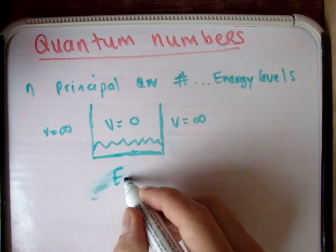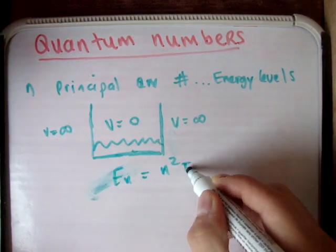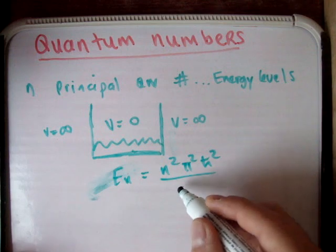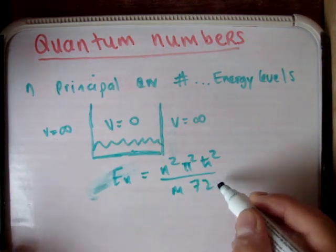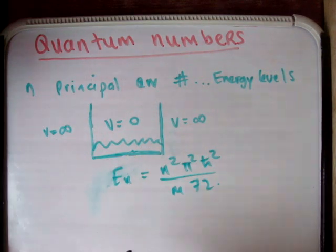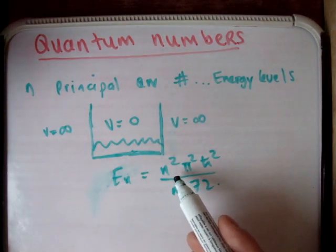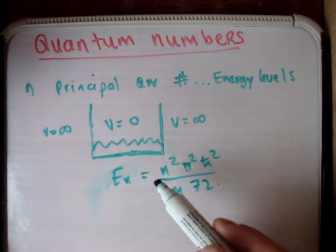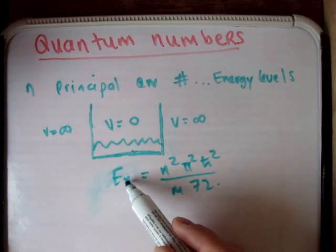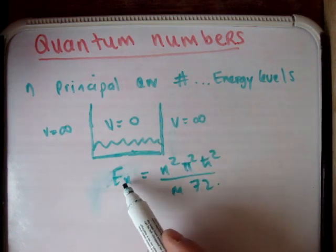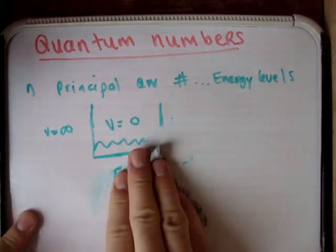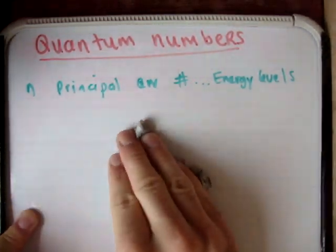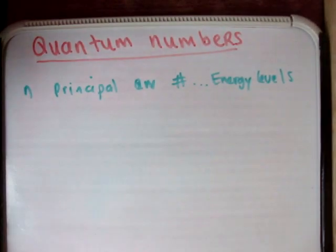It might look like n squared, pi squared, h squared over the mass times some constant. The point is that the energy is dependent on what level or what number you're at. So if I put in one I'm getting a certain energy level, if I put in two I'm getting a bigger energy level, and so on. So they call this the principal quantum number, and it came from solving the Schrödinger equation to get the wave functions of the particles.